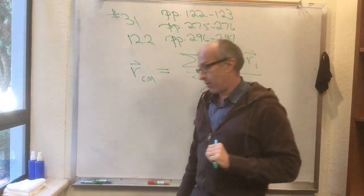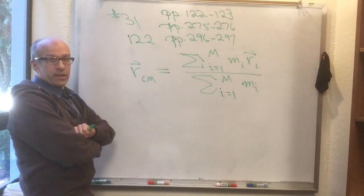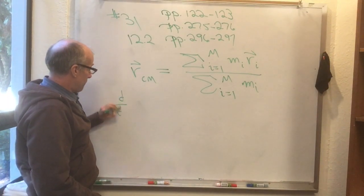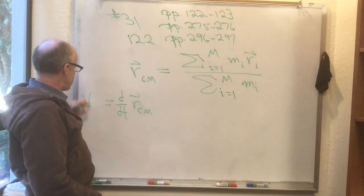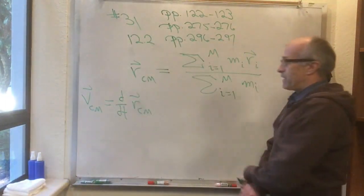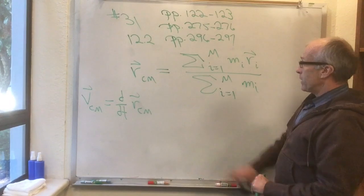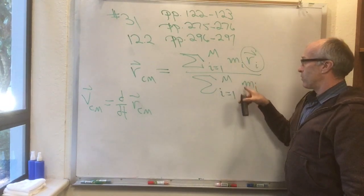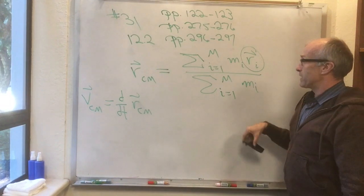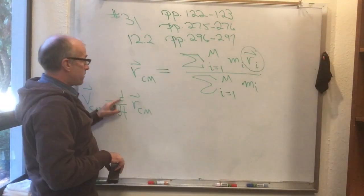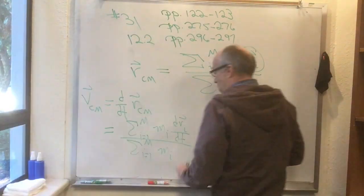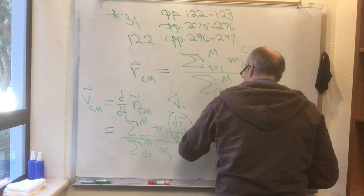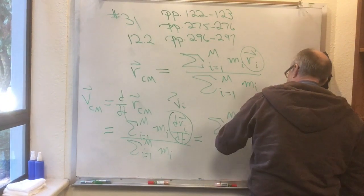Now why do this? If you're an observer moving with the center of mass, you have some velocity. Let's calculate it: v_cm = d/dt of r_cm. Looking at the right-hand side, only the position vectors r_i vary with time — masses don't change with time, and the denominator is just a sum of masses. So d/dt of r_cm gives (1/M) times the sum from i=1 to M of m_i * (d r_i/dt). But d r_i/dt is v_i, the velocity of the i-th particle. So v_cm = (sum from i=1 to M of m_i * v_i) / M.